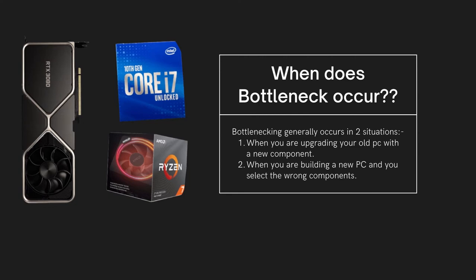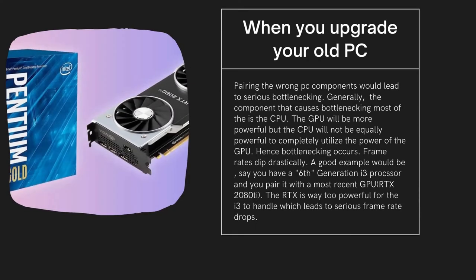Bottlenecking generally occurs in two situations. One, when you are upgrading your old PC with a new component. Two, when you are building a new PC and you select the wrong components. Pairing the wrong PC components would lead to serious bottlenecking. Generally, the component that causes bottlenecking most of the time is the CPU — the GPU will be more powerful, but the CPU will not be equally powerful to completely utilize the power of the GPU. Hence bottlenecking occurs.